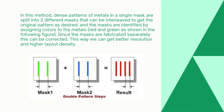How does double patterning work? First, mask one is fabricated, then mask two is fabricated, and then the final result is mask one plus mask two. What is the disadvantage of double patterning? In double patterning we are using two masks — mask one and mask two — so it will increase the fabrication cost.